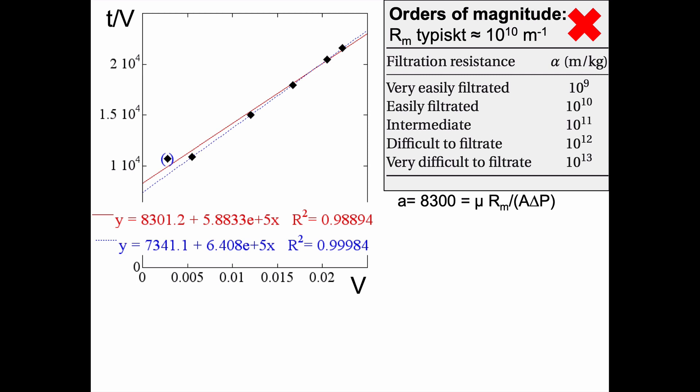Well, if we see here a equals 8300 approximately, and that should be the viscosity times Rm divided by area and the delta P. And b is then this 5.88 times 10 to the power of 5, viscosity, the filtration resistance, the concentration, and divide by 2A squared delta P. This means that if you put in all the data you get an Rm that is 6.6 times 10 to the power of 10 per meter.